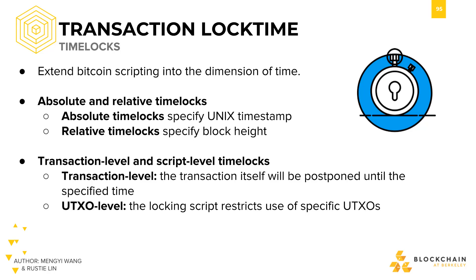Timelocks can be absolute or relative. Absolute timelocks specify an absolute point in the future when a particular transaction can go through — this is done using a unique timestamp or block height. Relative timelocks, on the other hand, specify a block depth, or the number of blocks that have been built on top of the block that contains the transaction.